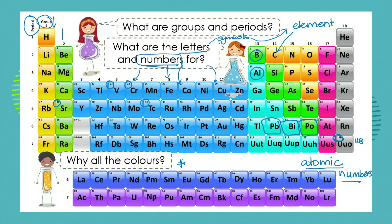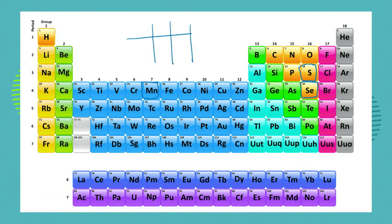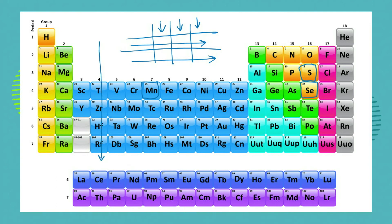Each column has its own number. We can see that there are one right up to 18 columns. And we call the columns — I'm going to just rub that out so that you can see the word clearly — we call the columns groups. So the groups are the columns on our periodic table. Just like a table has columns that go vertically and rows that go horizontally, we've got the same thing happening in our periodic table. We've got columns of elements and we have rows of elements.